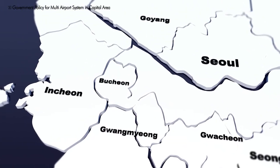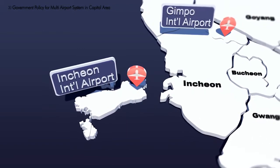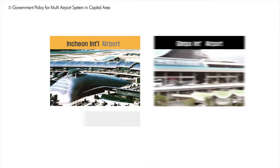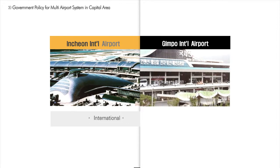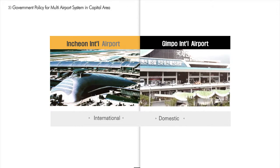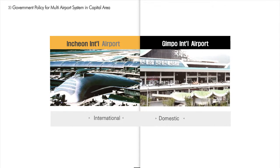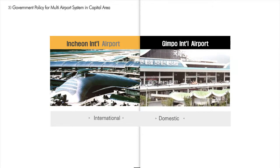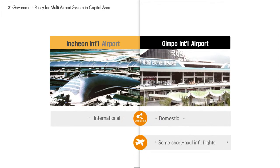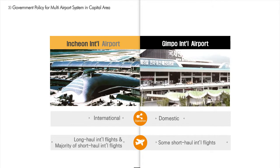The Seoul metropolitan area was originally served by Gimpo International Airport, and in 2001, Incheon International Airport was successfully opened. At first, the Korean government designated Incheon International Airport as the airport for international operations and Gimpo International Airport as an airport for domestic operations. However, with Gimpo International Airport's geographical advantage, several cities in foreign countries located within 2,000 kilometers have considerably shorter access time when using Gimpo International Airport. Therefore, Gimpo International Airport serves some short-haul international flights, while Incheon International Airport operates all long-haul international flights and the majority of short-haul international flights.